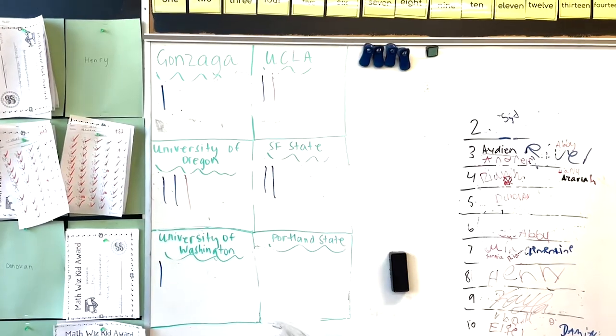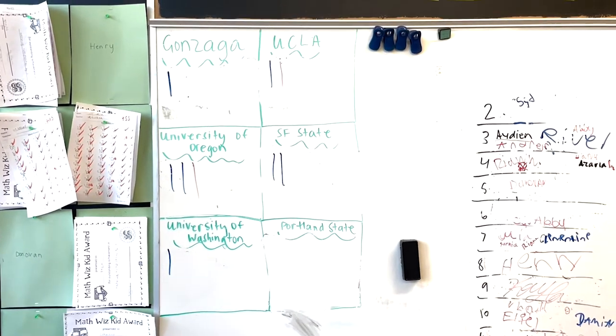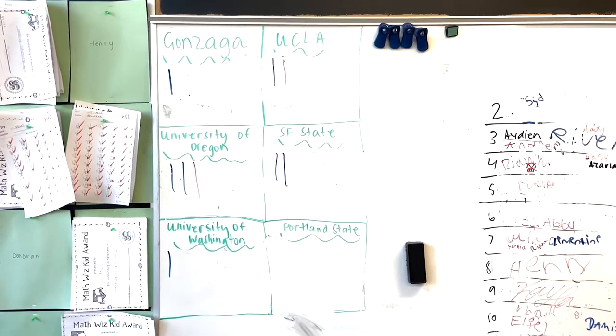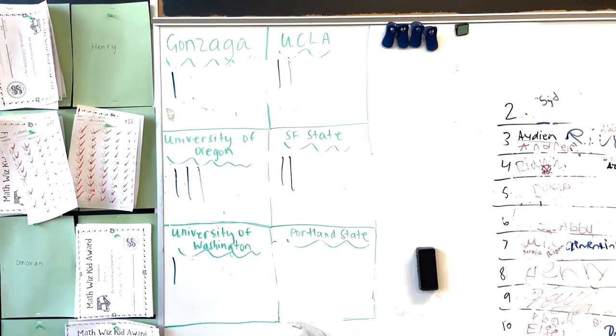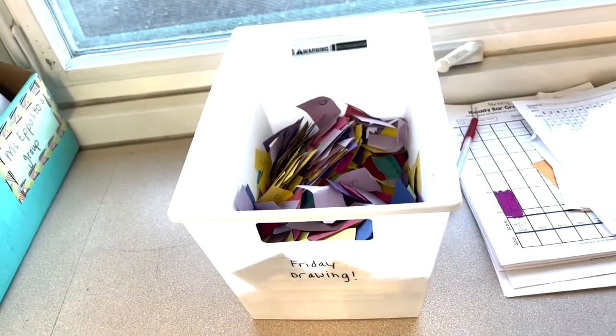This is where we keep track of table points. At the end of the day, the tables with the most points get to enter our class drawing, and so does our student leader. On Fridays we do a drawing and pull out student names to win prizes or a piece of candy. And here's our Friday drawing bucket.